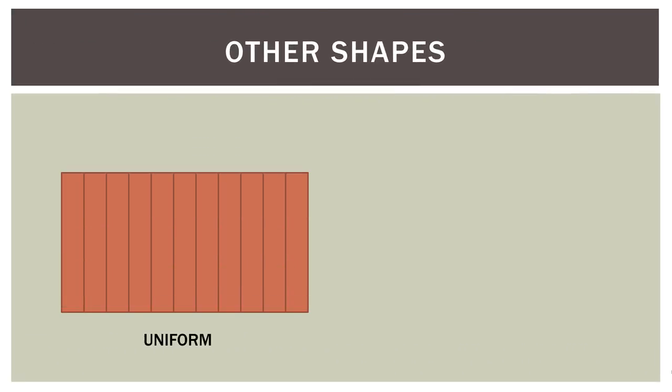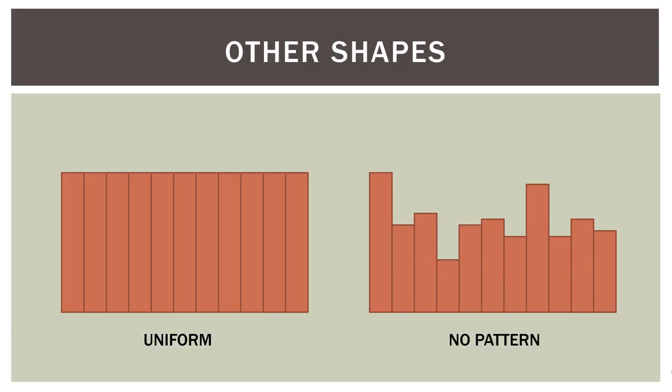We can also have what's called a uniform histogram, where the number of observations in each bin is the same or pretty close to the same, so the histogram basically looks like a rectangle. Or we can have one that doesn't really have any pattern at all — no symmetry, no skew, not uniform, no bimodal qualities — kind of like a random histogram. If you choose too few bins, your histogram can start looking like a uniform histogram — just a big block. If you choose too many bins, there aren't enough observations in each bin to show any pattern or shape.